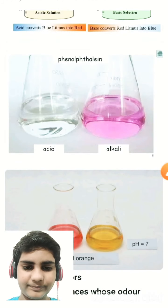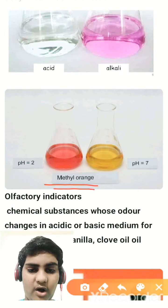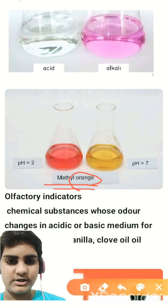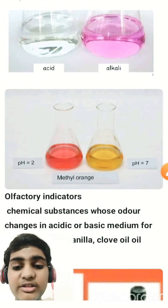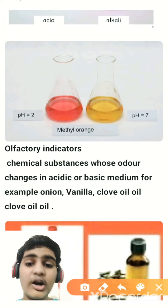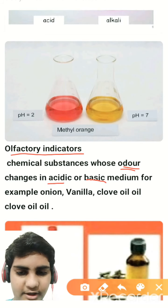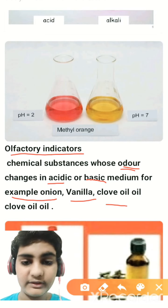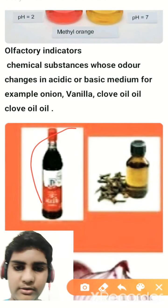Observe the diagram carefully — this shows phenolphthalein. The third indicator is methyl orange. Methyl orange is orange in color and turns red when put into acid and turns yellow when put into a base. There are over a hundred indicators, but in our syllabus we cover three or four. There are also olfactory indicators — chemical substances whose odor changes in acidic or basic medium — for example, onion, vanilla essence, and clove oil.